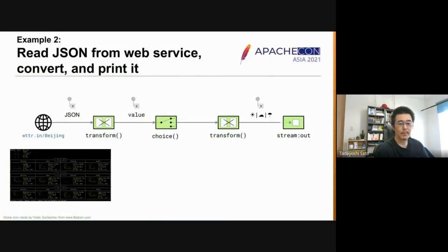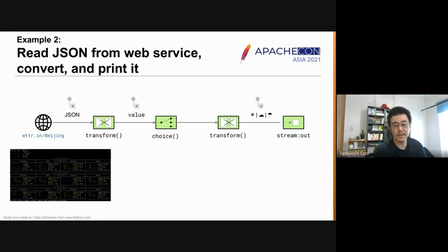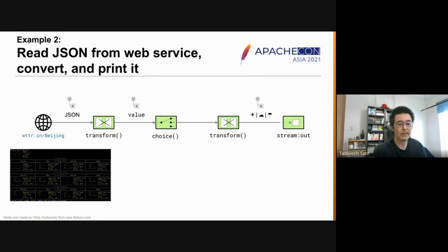Next example. This time, let's read some JSON from a web service, then convert and print it to standard output. I chose the weather web service, and let's fetch today's weather in Beijing. We then transform the JSON into a value representing the weather — sunny, cloudy, or rainy — and based on that value, we use a content-based router EIP to dispatch the message and transform it into emoji text.